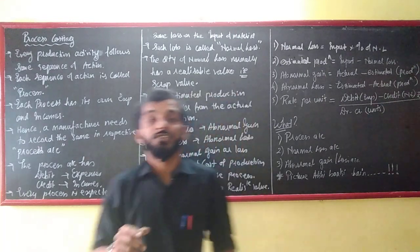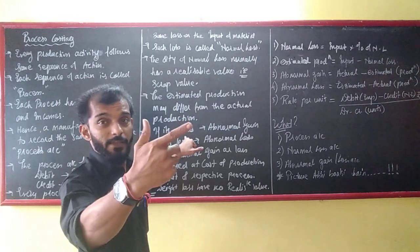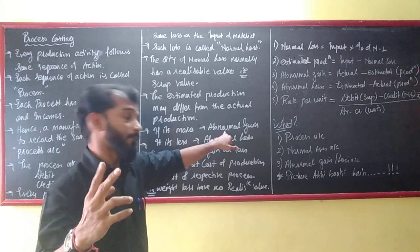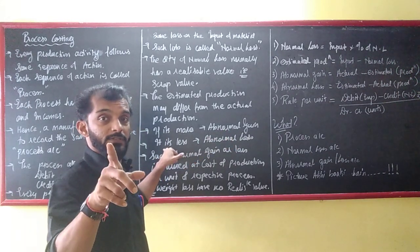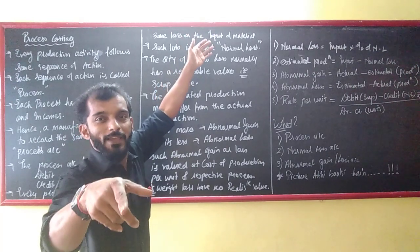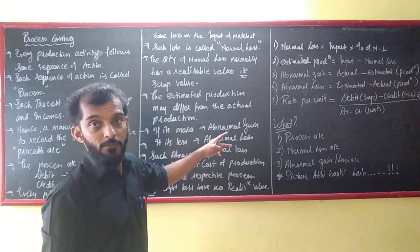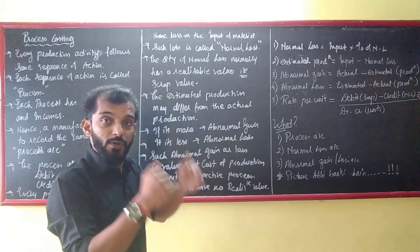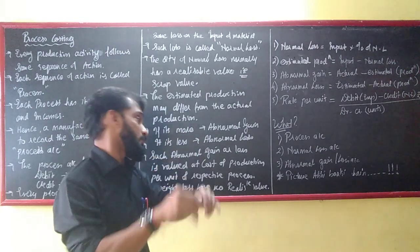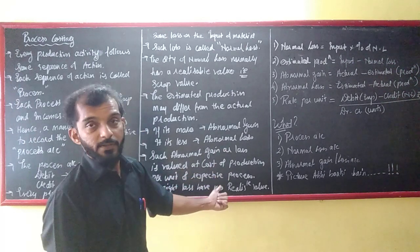I have to calculate the actual production compared to the estimated production. The estimated production may differ from the actual production. If actual is more than estimated — say you expected 90 kg but got 92 kg — that extra 2 kg is abnormal gain. If actual is less — say 88 kg instead of 90 kg — that 2 kg shortfall is abnormal loss. Such abnormal gain or loss is valued at the cost of production per unit of the respective process.